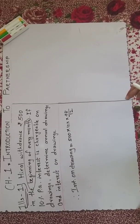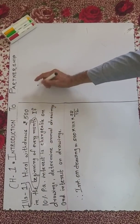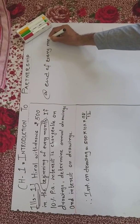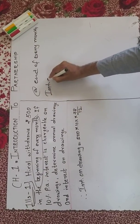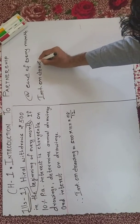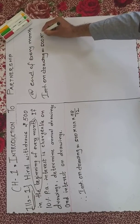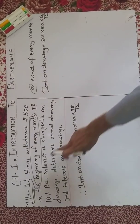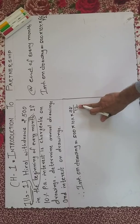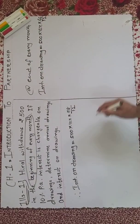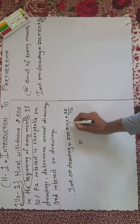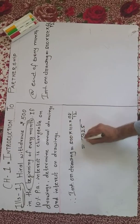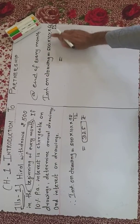But if it's at the end of every month, then you take 66 upon 12. The formula is: interest on drawing equals 500 into 10% into 66 upon 12. This is important to remember: beginning of every month uses 78/12, end of every month uses 66/12. For the first calculation: 500 into 10% into 78/12 gives us the answer.